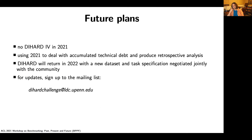Finally, touching briefly on future plans: there will not be a Die Hard 4 in 2021. We've been using 2021 to deal with accumulated technical debt from Die Hard 1, 2, and 3, and to produce some overdue retrospective analysis, including an overdue journal article. There will be a return in 2022 with a new dataset, new task specification, negotiated jointly with the community. If you're interested in updates or contributing, please sign up for the mailing list or contact me directly. Thank you, and thanks to Ken for organizing this workshop and giving us a venue to discuss these important issues.